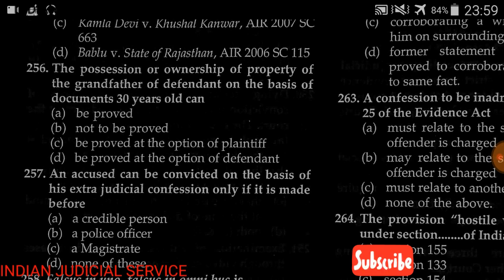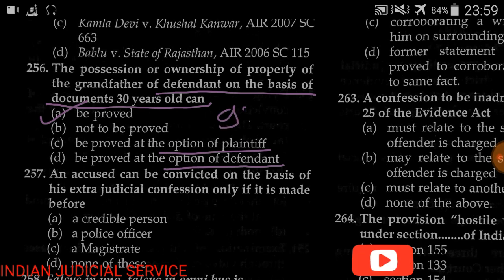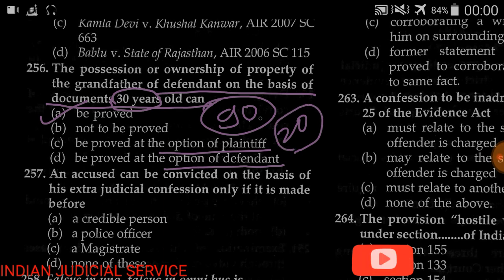Question number 256: The possession or ownership of property of the grandfather of a defendant, on the basis of a 30-year-old document, can be — (A) proved, (B) not proved, (C) proved at the option of the plaintiff, (D) at the option of the defendant. The answer is it can be proved under Section 90 of the Evidence Act. However, in Uttar Pradesh, the period is 20 years instead of 30 years.